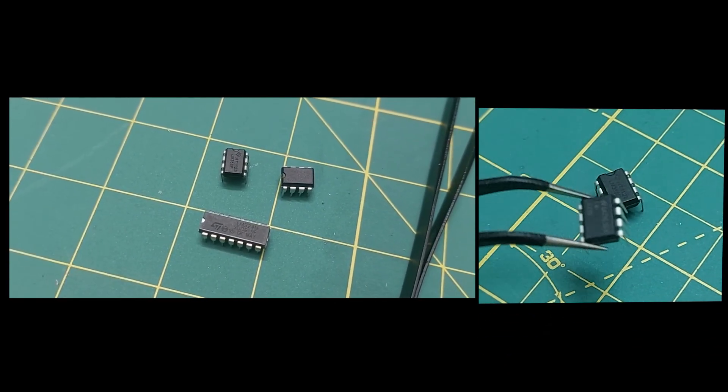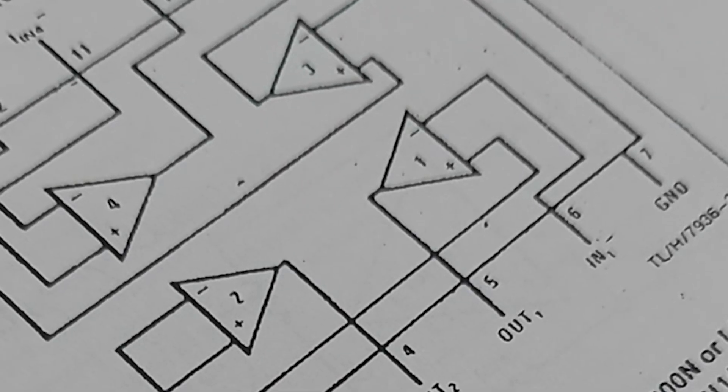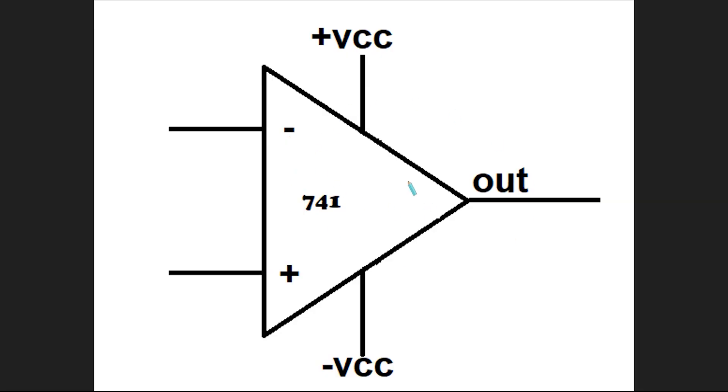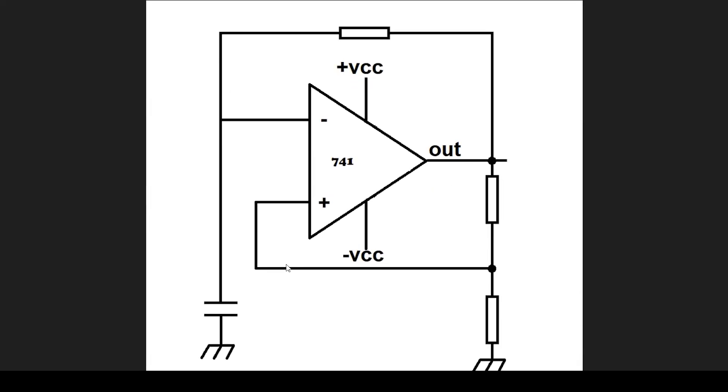Let's take a closer look at the op-amp. In circuit diagrams, it's usually represented by a triangle. It has three main terminals: a negative input, a positive input, and an output. It also has two additional pins for supplying power to the IC. To build an oscillator, we need to set up a circuit like this. Let's analyze how it works.